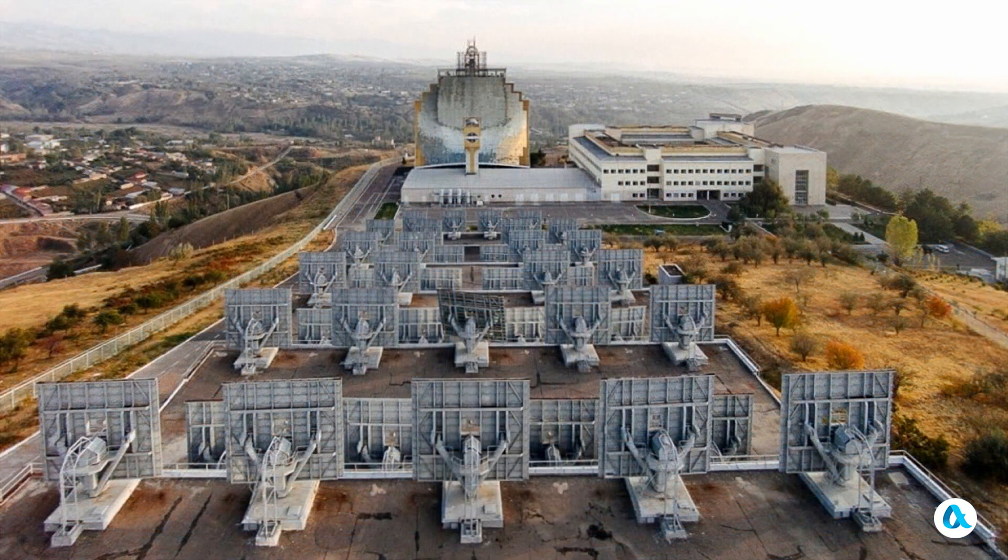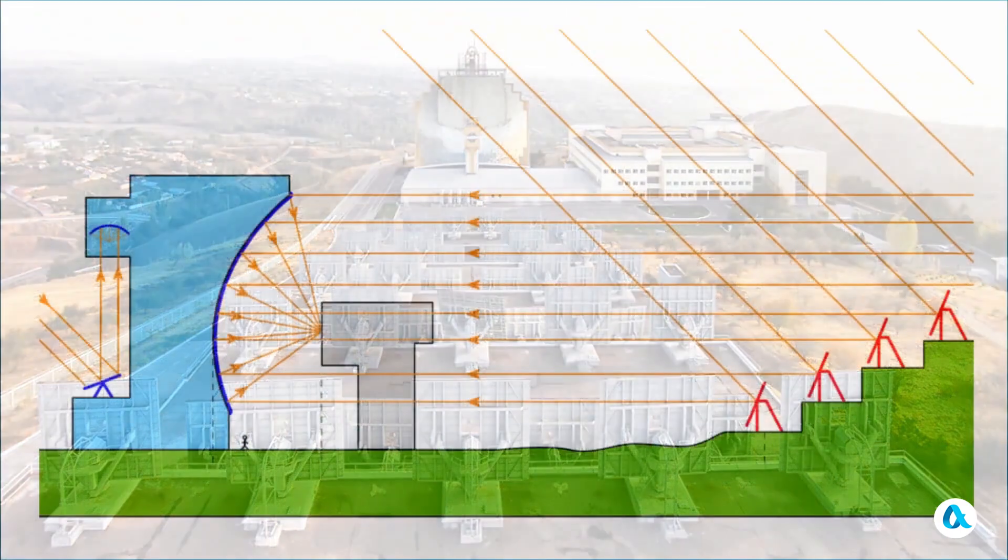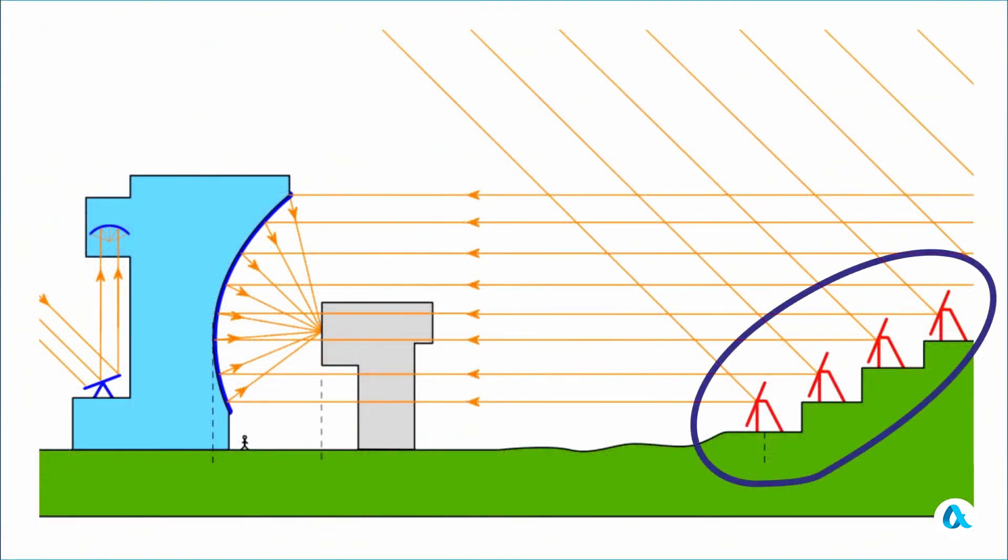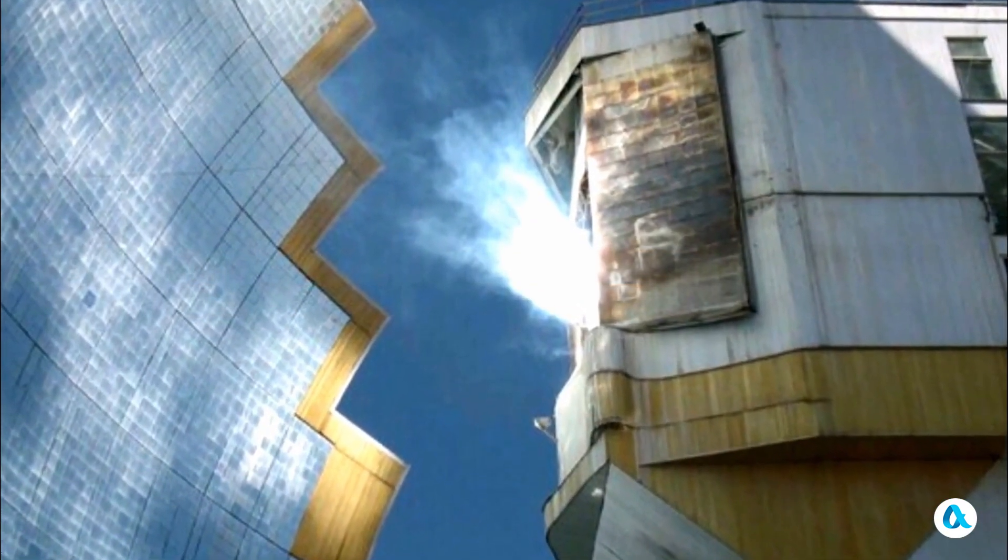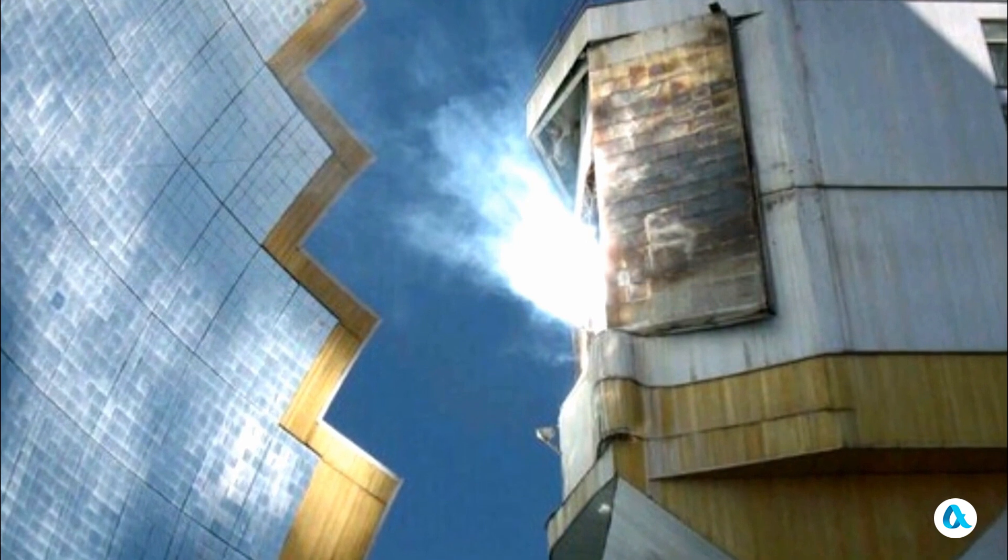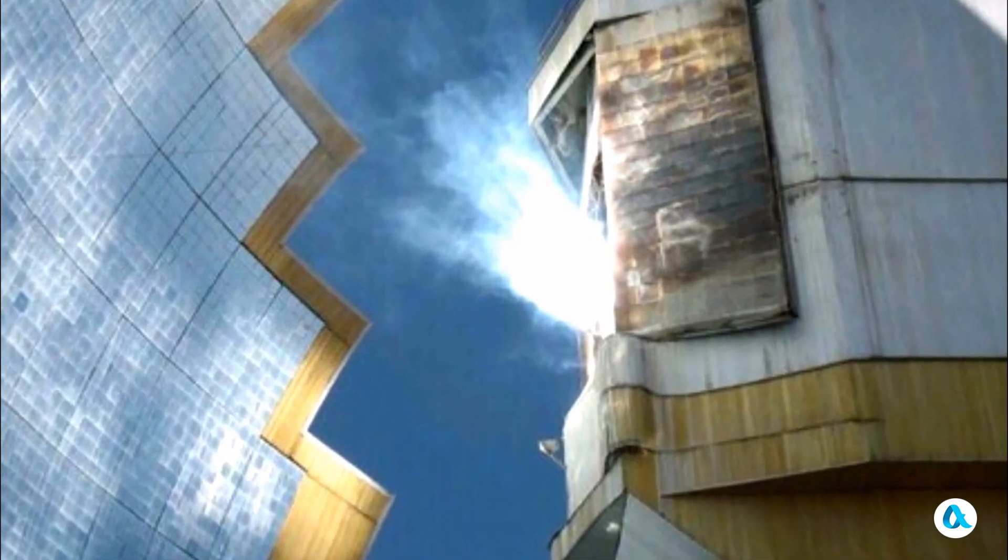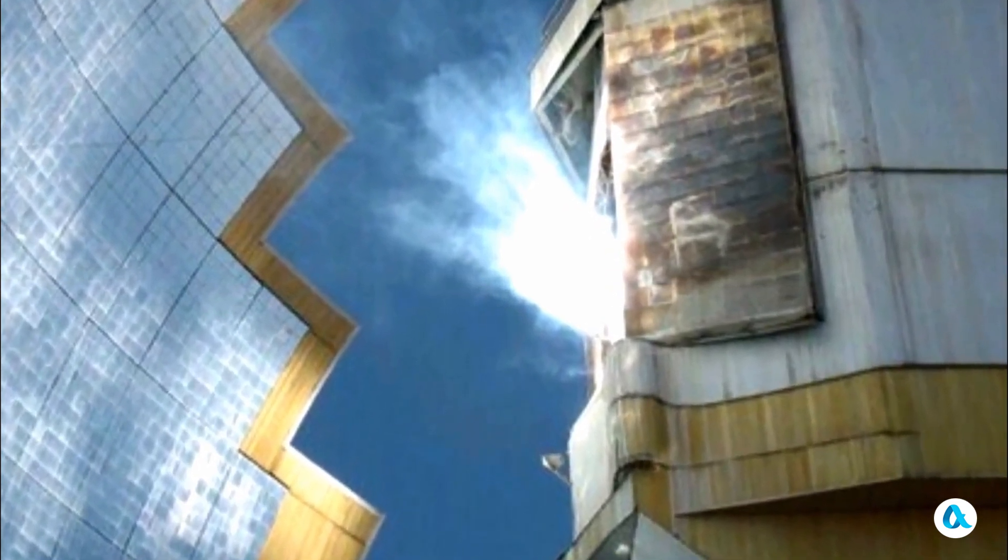Sun rays are directed onto this massive mirror using a system of rotating heliostat mirrors and are concentrated at the focal point through a precise alignment of the mirrors. The temperature in this location reaches 3,500 degrees, enabling the melting of ceramics, the creation of new materials, and the testing of the outer shell of spacecraft.